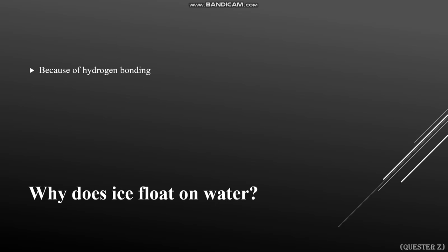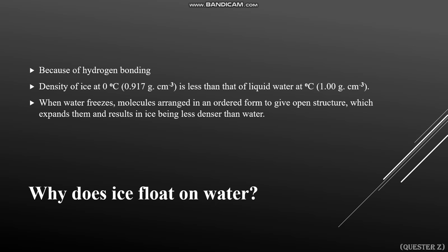An important question: why does ice float on water? Because of hydrogen bonding, the density of ice at 0°C is 0.917 g/cm³, which is less than that of liquid water at 0°C, which is 1.00 g/cm³. When water freezes, molecules arrange in an ordered open structure, which causes expansion, and this expansion causes ice to float on water.